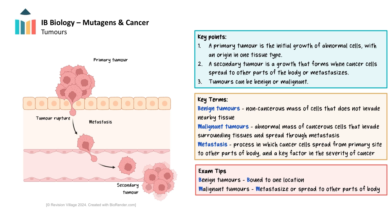Benign tumours are often treated with surgical removal, while malignant tumours typically require more aggressive treatments such as chemotherapy, radiation, or targeted therapies due to their potential to spread.